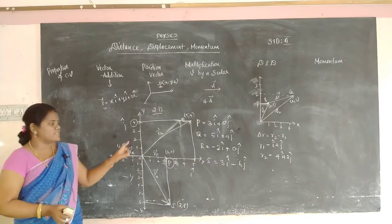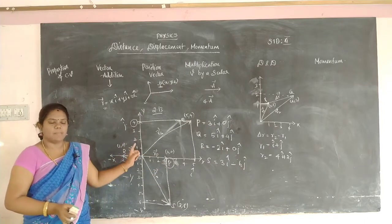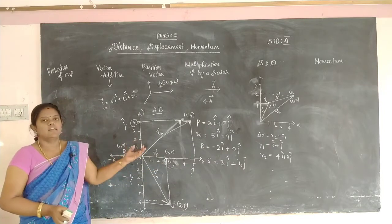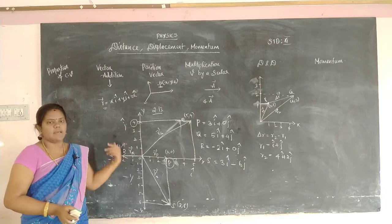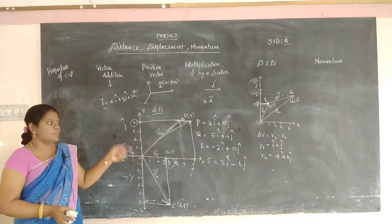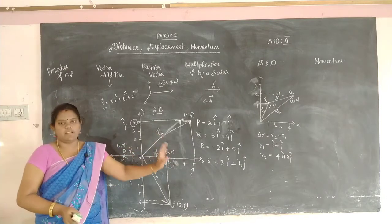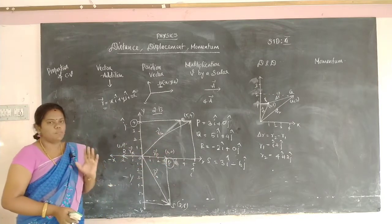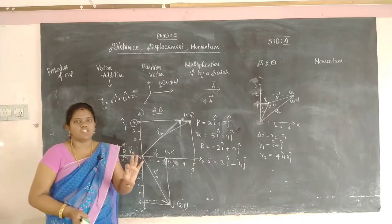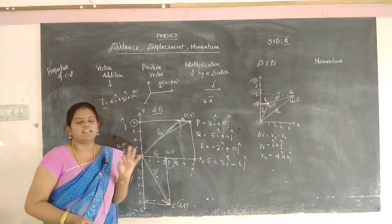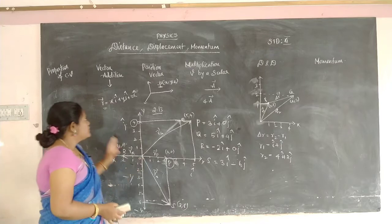From the graph, you identify the X-axis position, the Y-axis position, whether it is in the negative X or negative Y direction, and then write the position vector accordingly. The position vector tells the location of one object.